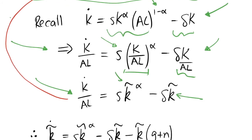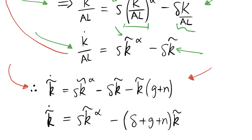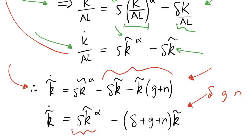Substituting in, we have k̃-dot = s·k̃^α − δ·k̃ − (g + n)·k̃. We can factorize, noting k̃ is a common factor, giving k̃-dot = k̃·[s·k̃^(α−1) − (δ + g + n)]. We can view the term (δ + g + n) as the break-even term — covering depreciation, technology growth, and population growth — and s·k̃^(α−1) as the savings term. These are all in terms of k̃, so they are per effective units of labour variables.